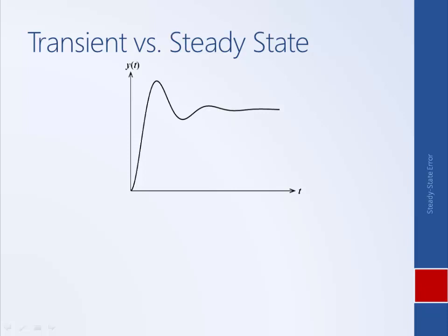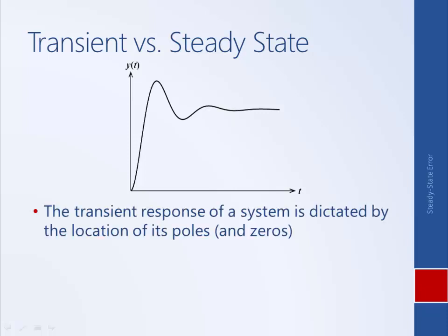So here we have a typical output response for a dynamic system. And so far in the course, we've learned that the transient response of a system is dictated by the location of its poles and zeros. Where the transient response is when the system's response is changing, and the location of the poles and zeros define aspects of this transient behavior.